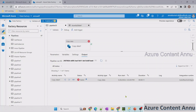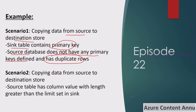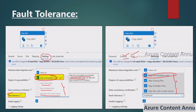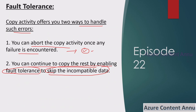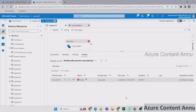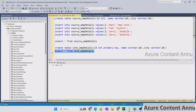As discussed, copy activity by default does not allow bad data to enter by aborting the job completely. It encounters the failure and does not allow the bad data. But in this case, even the good data is not copied — checking the sink table confirms there is no data.